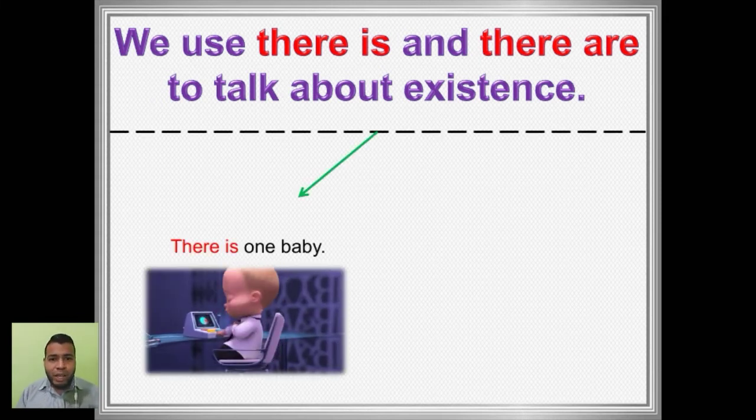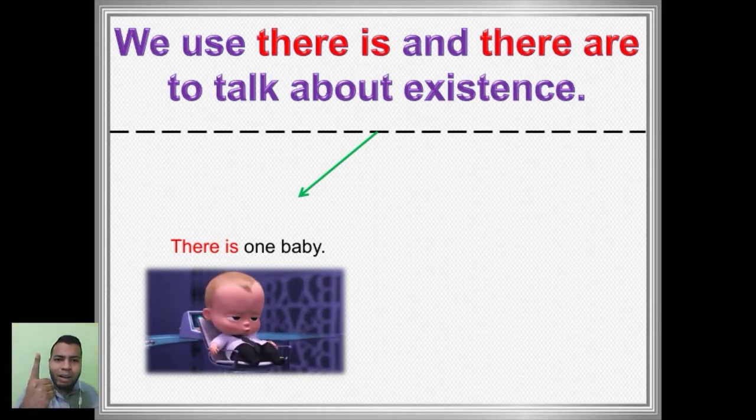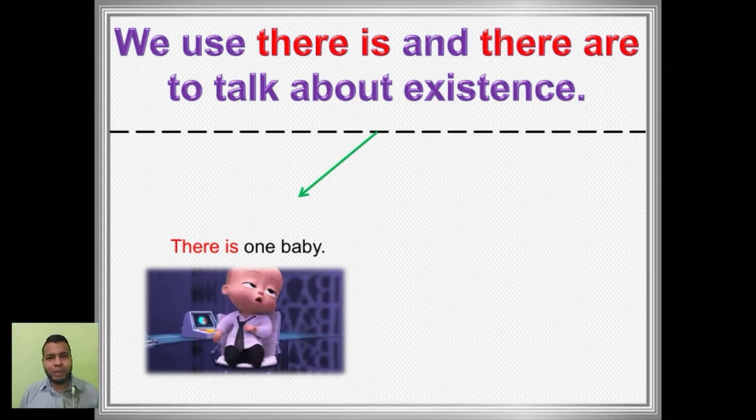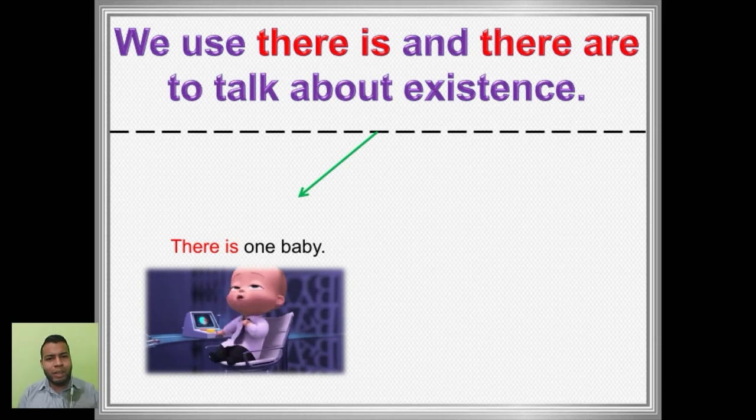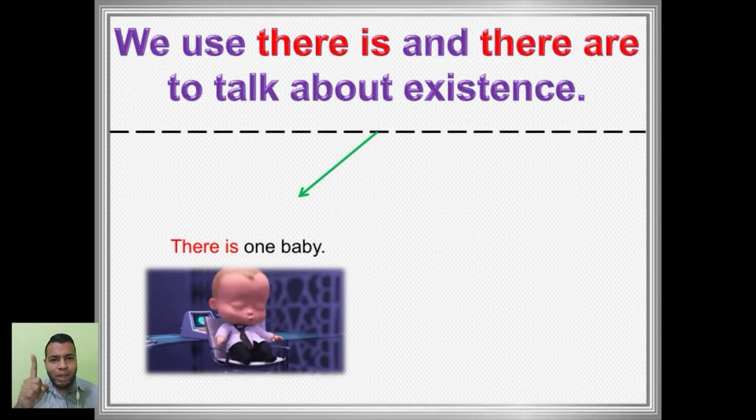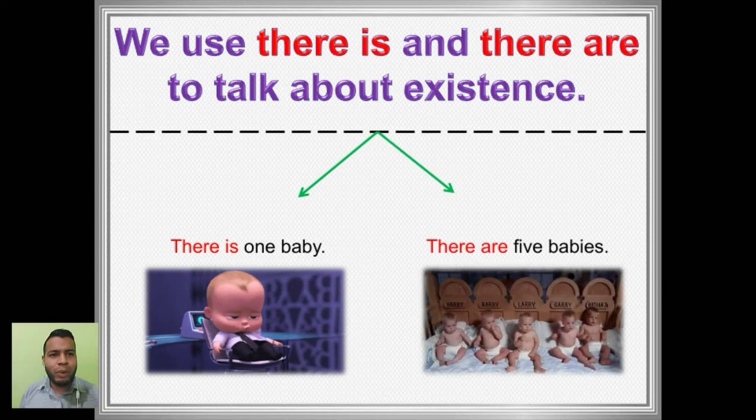There is is singular. As you can see in the example, there is one baby. ¿Qué quiere decir esto? Que el there is lo vamos a utilizar para referirnos a una persona, animal o cosa singular. Es decir, uno solo. There is singular. Ok, there is es singular.